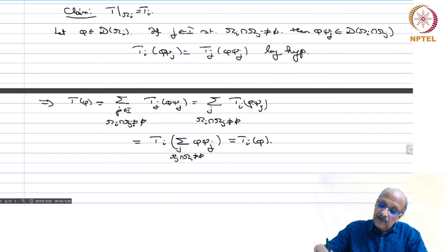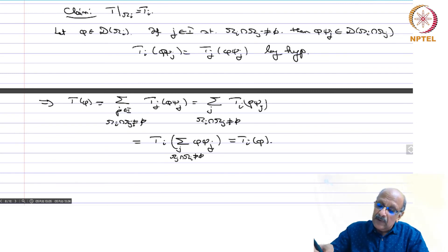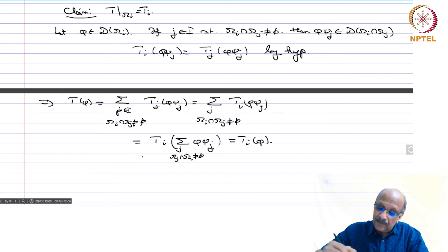Why did t_i come out of the summation? Because the support of phi intersects only finitely many of the supports of psi_j, so this is essentially a finite sum. So t_i can be pulled out, and consequently we have completed the proof.